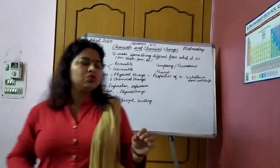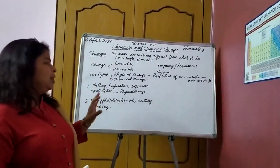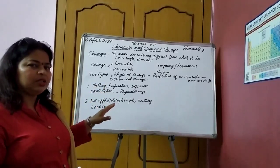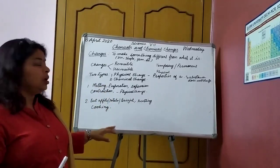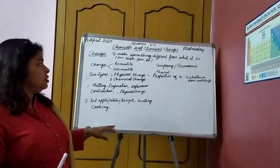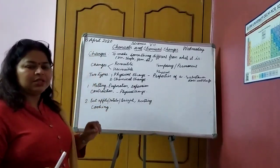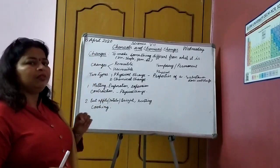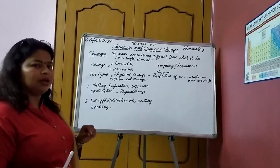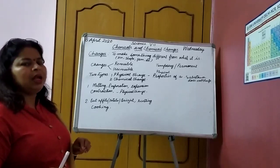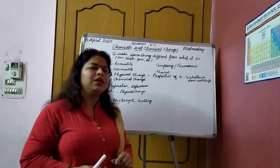So we have discussed so many examples. I think you are now clear about what is physical and chemical change. Today's work that you need to do: define changes — what do you mean by change, how many types of changes are there, what are reversible and irreversible changes, what are temporary and permanent changes — give examples, and differentiate between physical and chemical changes with examples.